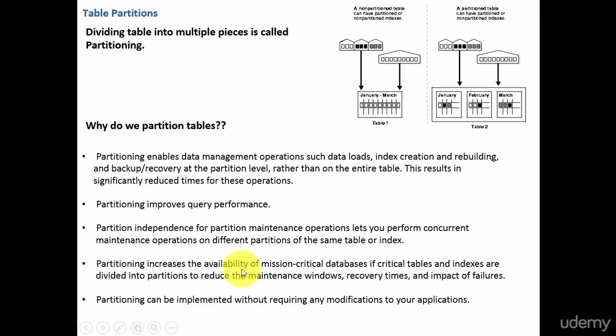Partitioning increases the availability of mission-critical databases if critical tables and indexes are divided into partitions, reducing the maintenance window, recovery times, and impact of failures. Because we are able to perform operations concurrently, we can complete tasks faster, and automatically the maintenance window will be reduced. That means we can perform operations quickly and then bring the application back live.